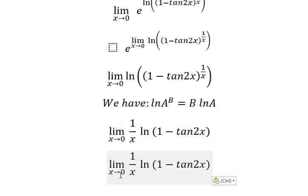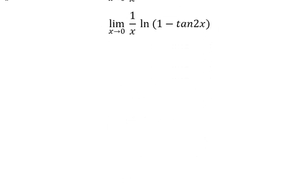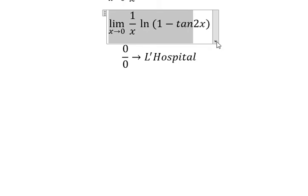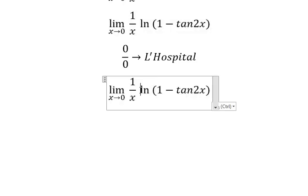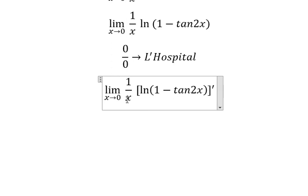Next, when x approaches zero, this becomes zero, and ln(1) equals zero, so we have zero over zero again. We can use L'Hôpital's rule — we need to take the derivative of this expression on the numerator and denominator.